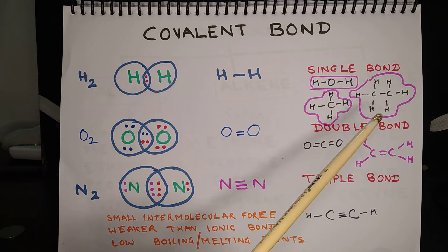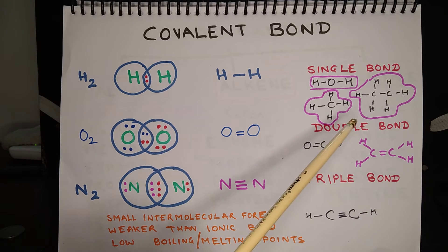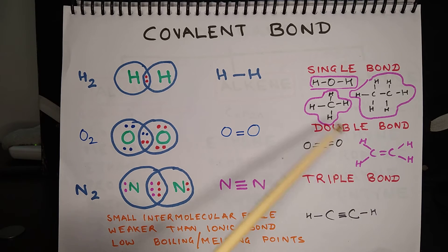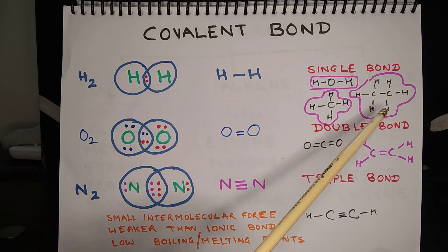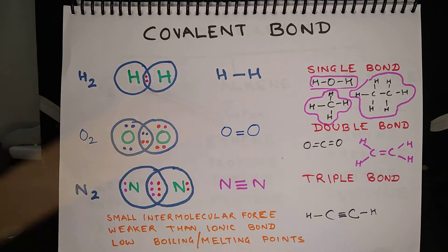Some other examples of compounds with a single bond are methane, that is CH4, and ethane, that is C2H6.